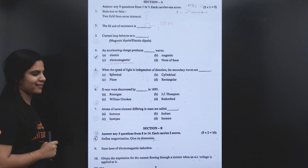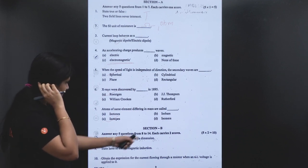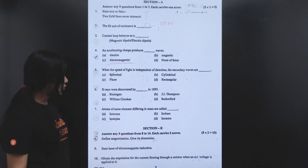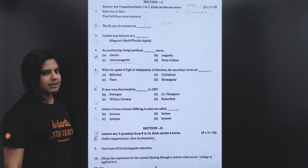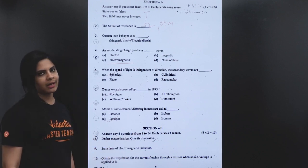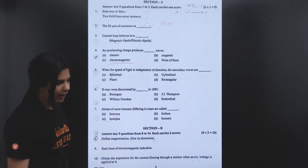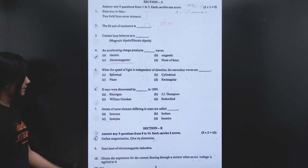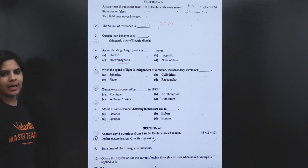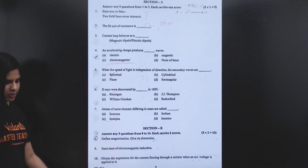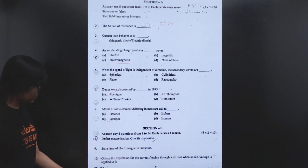Answer any 5 questions from questions 8 to 14. Define magnetization: magnetization is magnetic dipole moment per unit volume. Then, state the laws of electromagnetic induction — Faraday's laws, we will just mention.